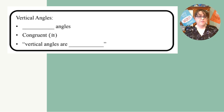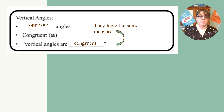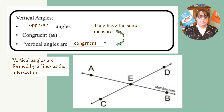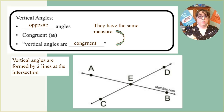Vertical angles by definition are angles that are opposite one another. They are congruent — congruent means they have the same measure. Vertical angles are formed by two lines at the intersection, creating a diagram where angles are opposite of one another.